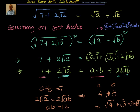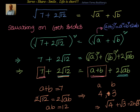That means 4 and 3 satisfy: 4 plus 3 is 7, and 4 into 3 is 12. So the steps we follow: find the square root of 7 plus 2 root 12, say it equals root a plus root b, square both sides, and you get a plus b plus 2 root ab. Equate the integer part: a plus b equal to 7, and equate the irrational part: ab equal to 12. If the left-hand side has 2 root of something, then whatever is inside the square root equals ab.